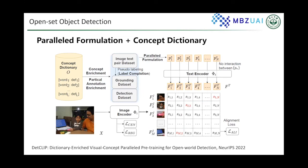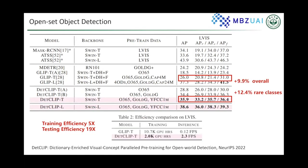DeckCLIP also develops a vision-language pre-training pipeline with a novel parallel concept formulation to improve learning efficiency. Instead of feeding the whole text to the model, we check each concept separately and feed them into the text encoder in parallel. This parallel formulation allows the model to avoid unnecessary interaction between uncorrelated categories, and we can also produce rich descriptions for each concept by converting detection and image-text pair datasets into a parallel formulation.